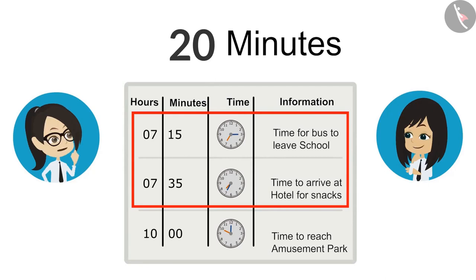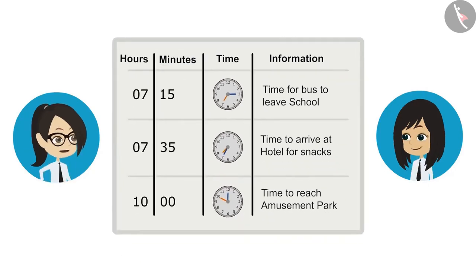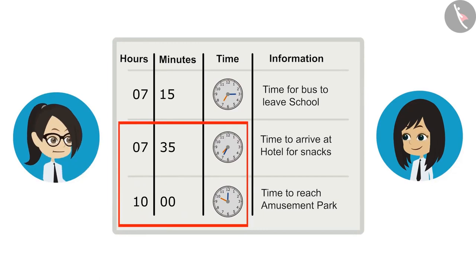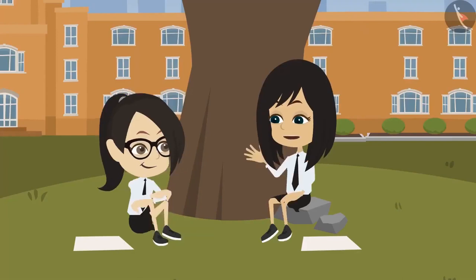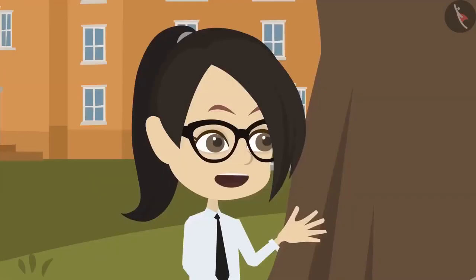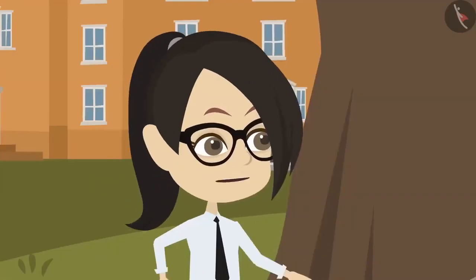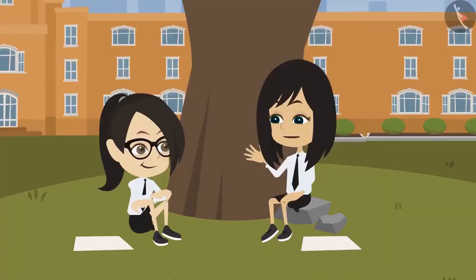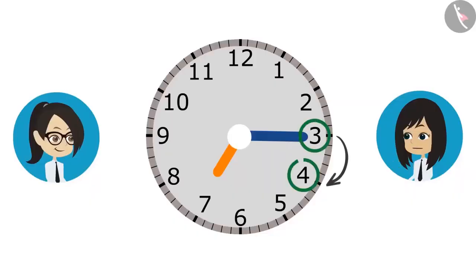This was really very easy. Now we know that we have to reach the amusement park at 10 o'clock. If we also know how long it takes to go from the hotel to the amusement park, then we will be able to tell at what time we should leave the hotel. Sir has said that it takes 55 minutes from hotel to reach the amusement park. Yes, I remember.